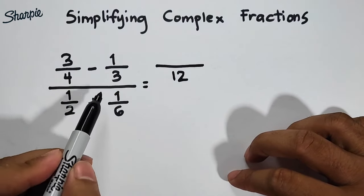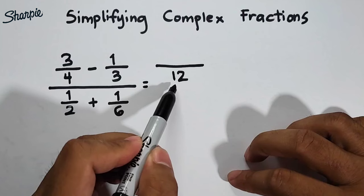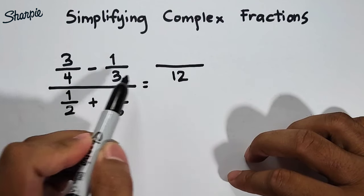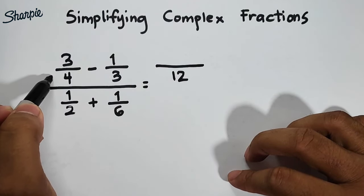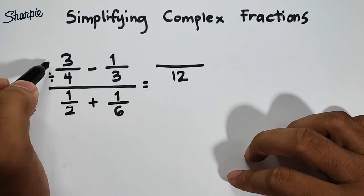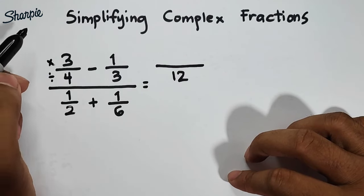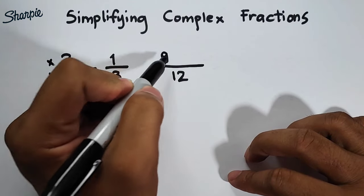So remember, the process here is that you will divide 12 by 4. 12 divided by 4, that is equal to 3. And then times 3, that is equal to 9.